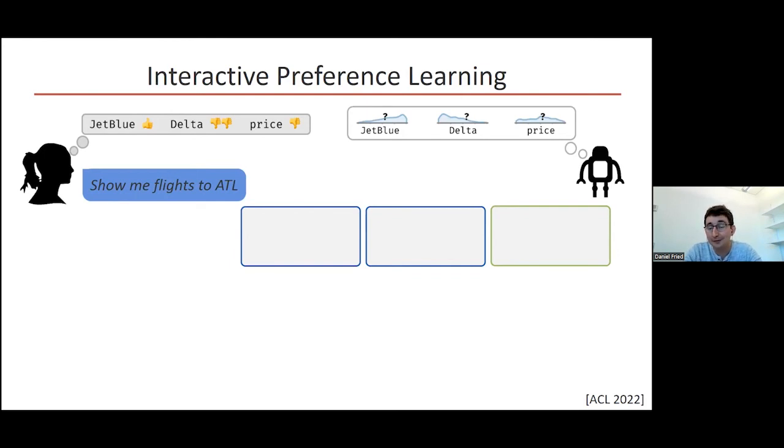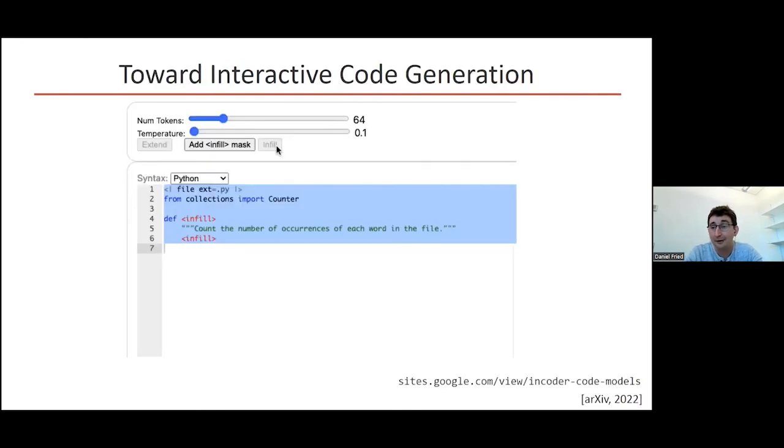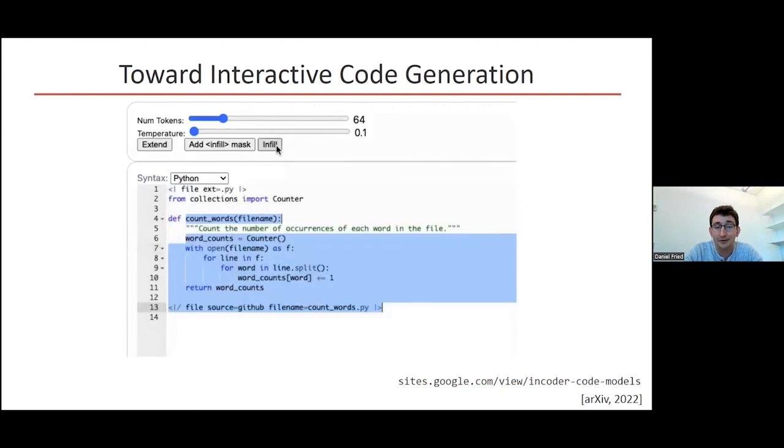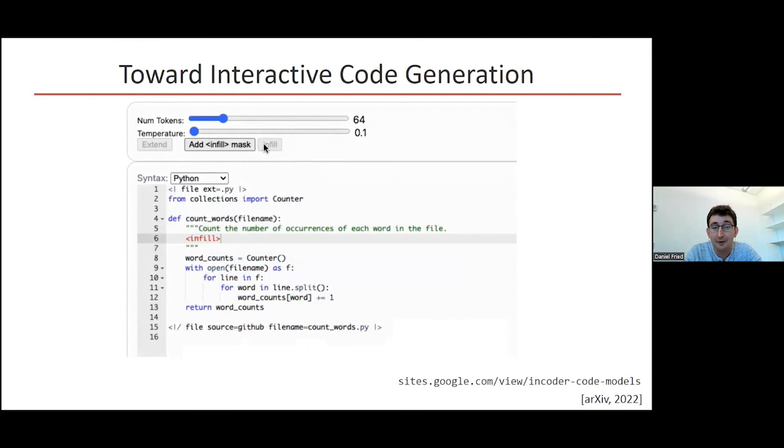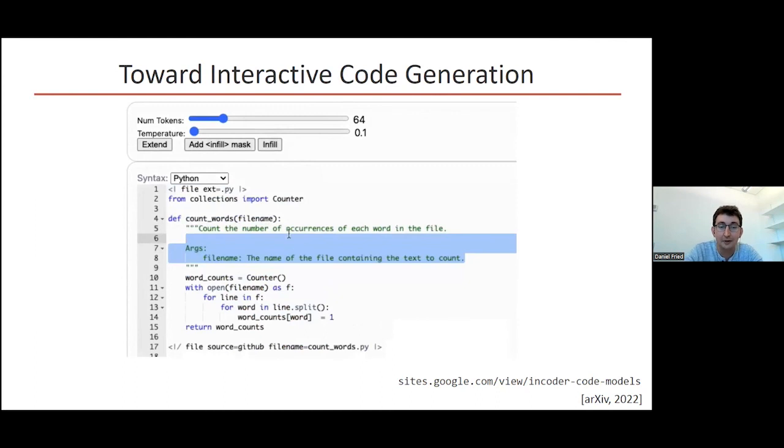One setting I'm trying to apply a lot of these methods now is interactive code generation. In collaboration with folks at Meta and FAIR, we've built this generative model of code files, which have both code and comments. We're working on ways we can make it easier for people to interactively generate code using these models. The person can choose a region in the code file that they want the model to suggest some code at, and then interactively edit the code alongside the model. We can model why did the person choose to interact with the model and the code in the way they did—why did they choose to write a comment versus make an edit versus supervise with test cases?